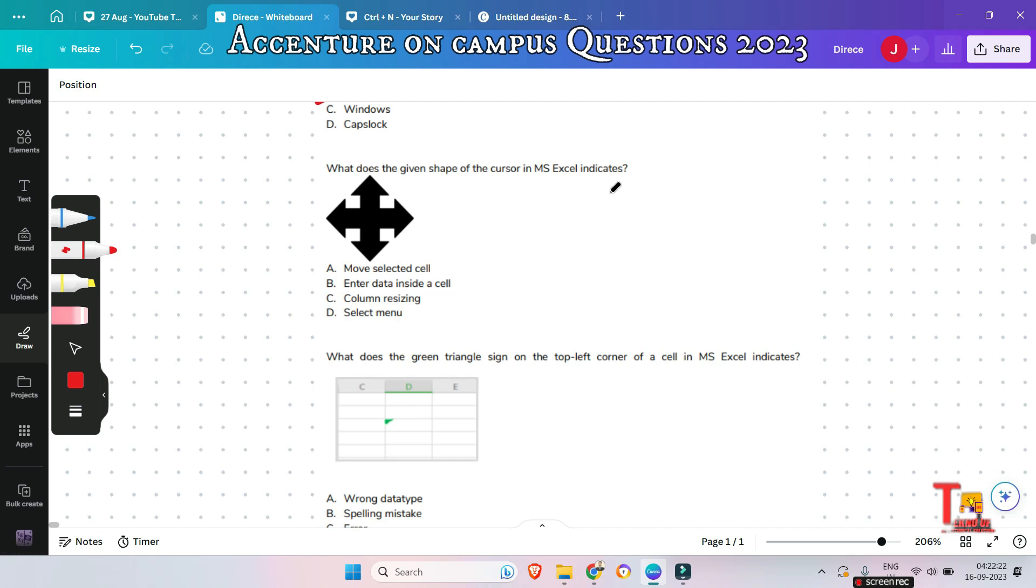What does the given shape of cursor in MS Excel indicates? Move selected cell, enter data inside a cell, column resizing or select a menu? What could be the answer? Please give me the answer before I give answer. Let me answer that. It is used to move a selected cell.